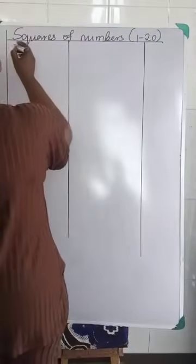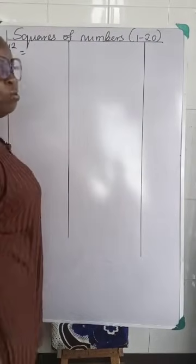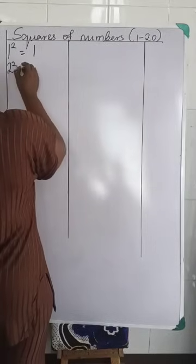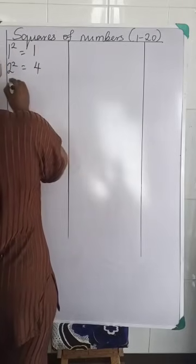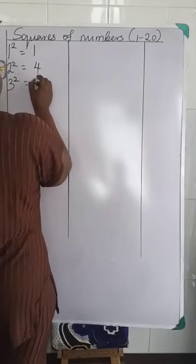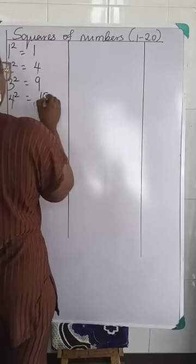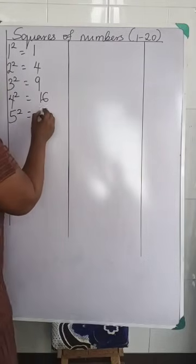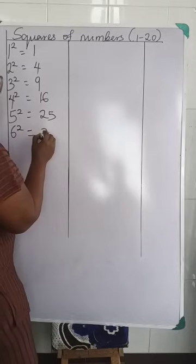Now let's look at it. We'll have 1 squared, which is 1 times 1, and it is 1. 2 squared, which is 2 times 2, and we'll have 4. 3 squared is 9. 4 squared is 16. 5 squared is 25. 6 squared, 36.